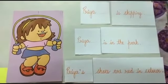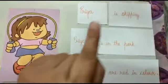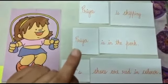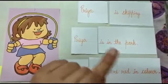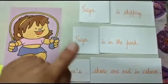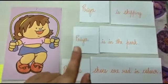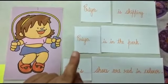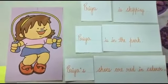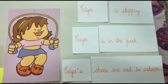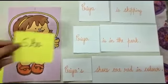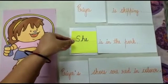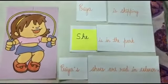Let's see how we are going to do it. The first sentence: Priya is skipping. Second sentence: Priya is in the park. Now the second sentence is again talking about Priya. So instead of the naming word Priya, we can use she, because Priya is a female and for female gender we use the pronoun she. She is in the park.